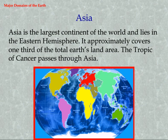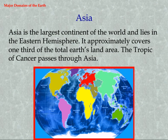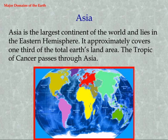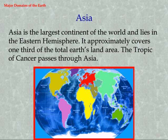Asia is the largest continent of the world and lies in the Eastern Hemisphere. It approximately covers one-third of the total Earth's land area. The Tropic of Cancer passes through Asia.